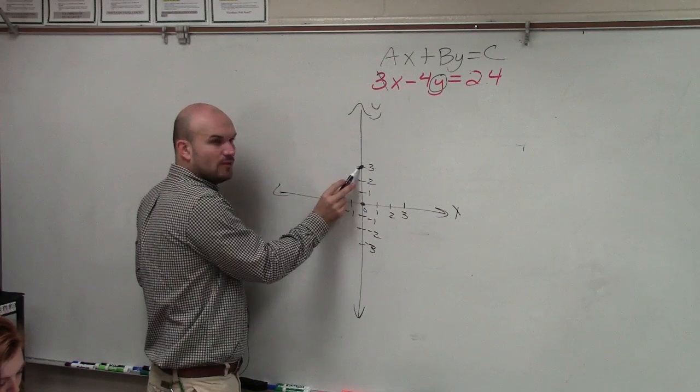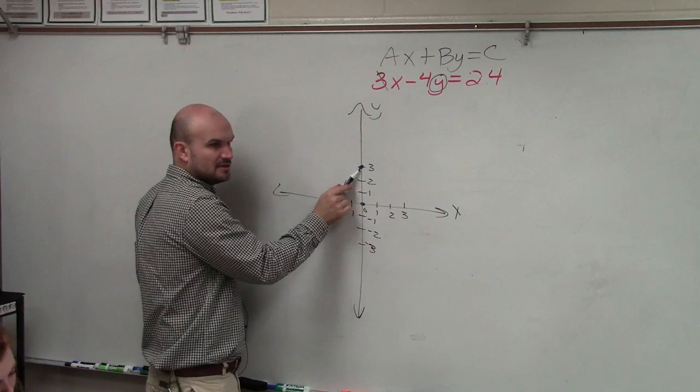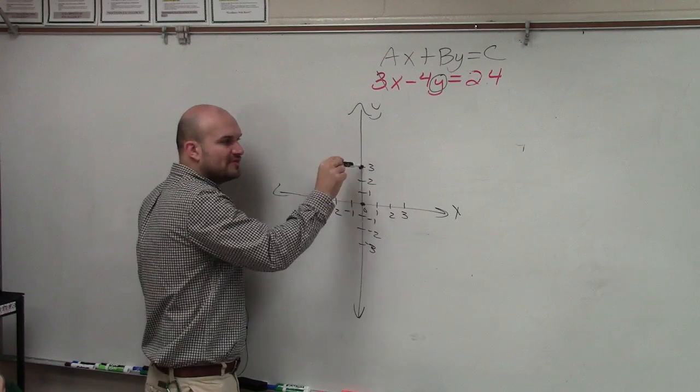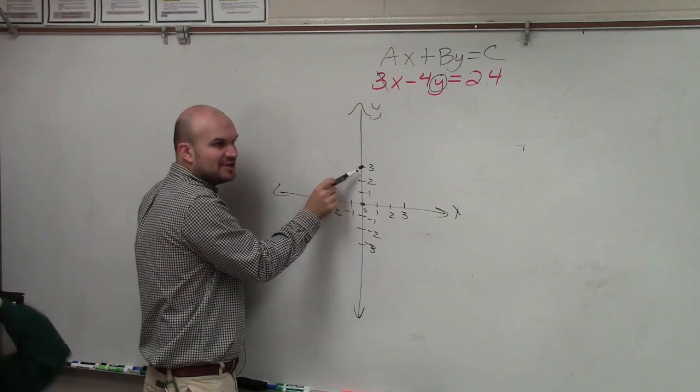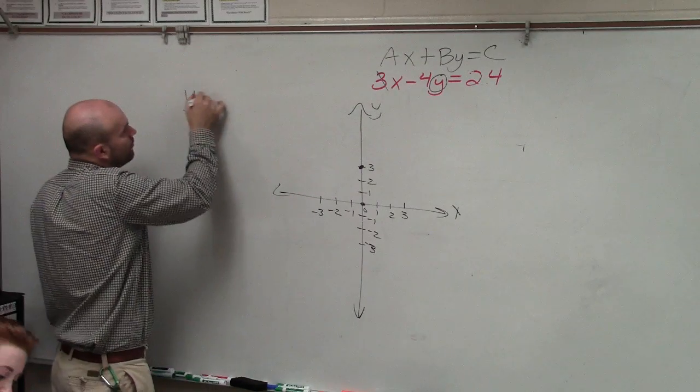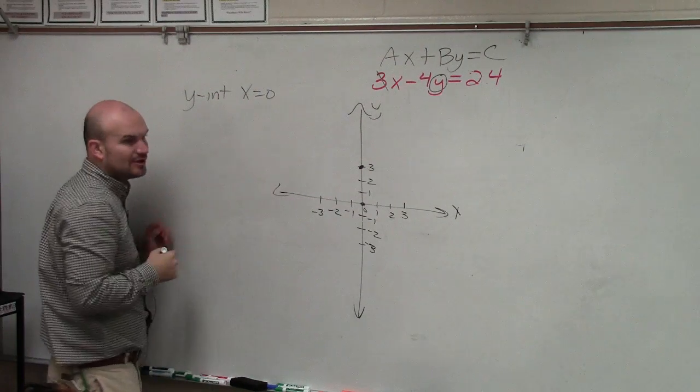When there is a point on the y-axis, have I gone left or right on the x-axis? No. So therefore, this point has an x value of 0. At the y-intercept, x equals 0.